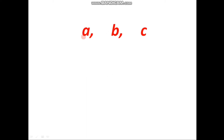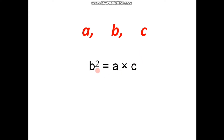Suppose there are three numbers a, b, and c, in which it is given that b² is equal to a × c — that is, the middle term squared is equal to the product of the remaining two terms. In this case, we say that b is the geometric mean of a and c. We will use this principle in a right angle triangle to prove the theorem of geometric mean.